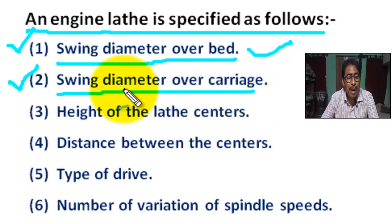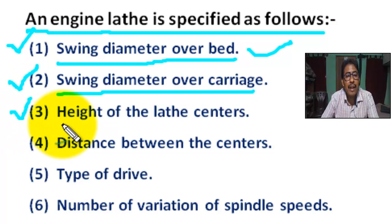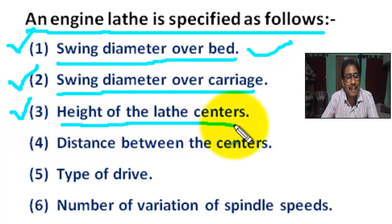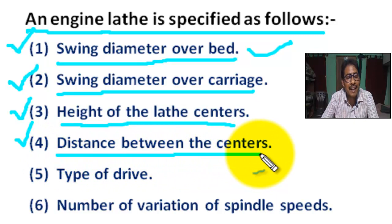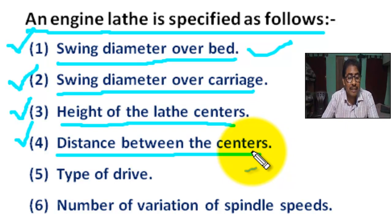Swing diameter over carriage means the maximum diameter of the work that can be rotated without striking the carriage. Number three: height of the lathe center — that means the height of the live center and dead center above the top of the bed. Number four: distance between centers — that means the maximum job length that can be held between the centers.